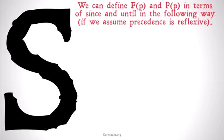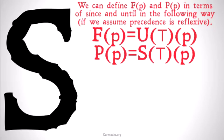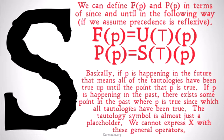We can define FP and PP in terms of since and until in the following way. If we assume that precedence is reflexive, we can define FP as: tautologies are true until P is true. Basically, if P is happening in the future, that means all of the tautologies have been true up until the point that P is true. Note that 'until' is not saying that the tautologies stop being true after P is true, simply that they were true up until the point that P is true.